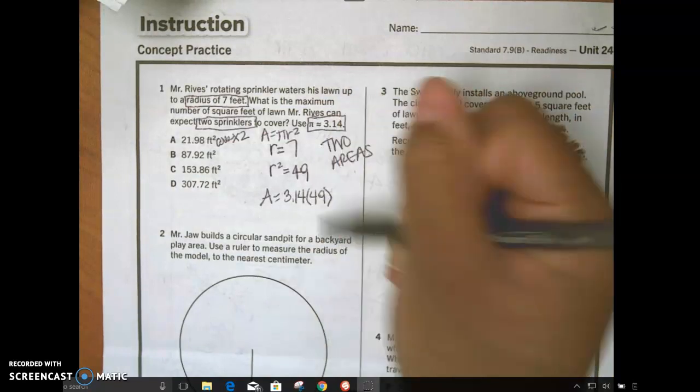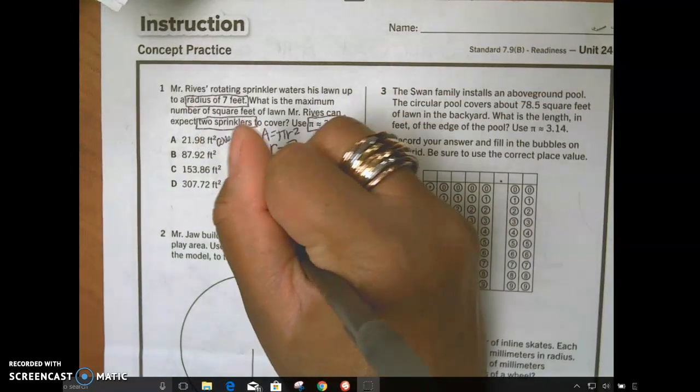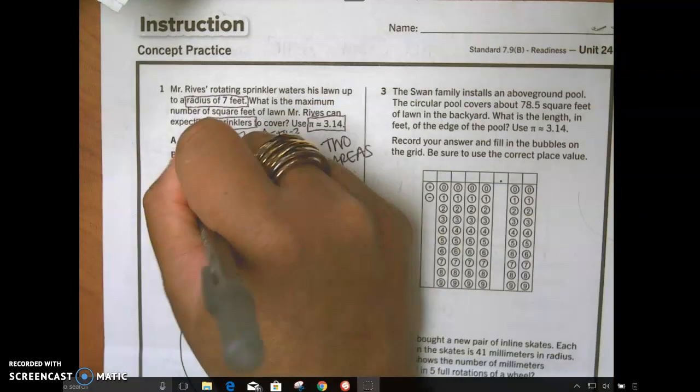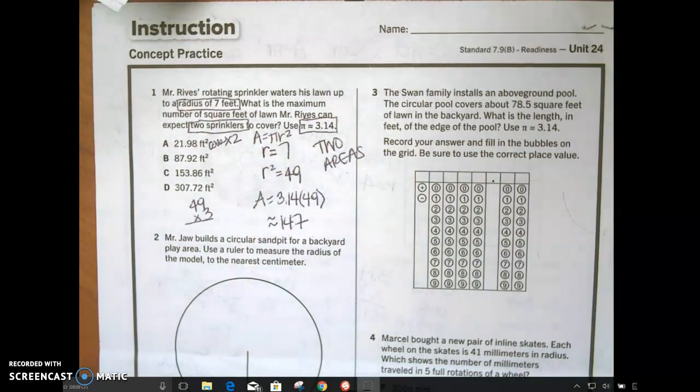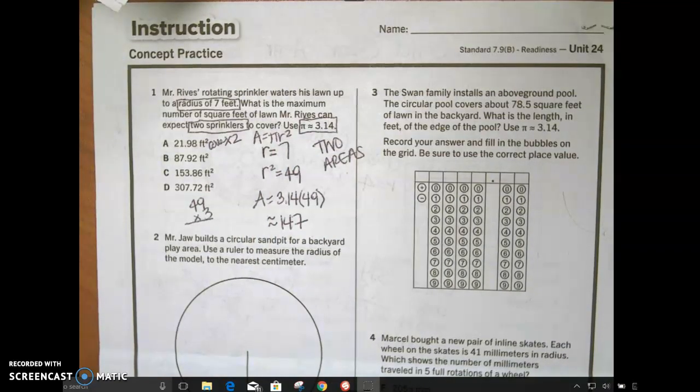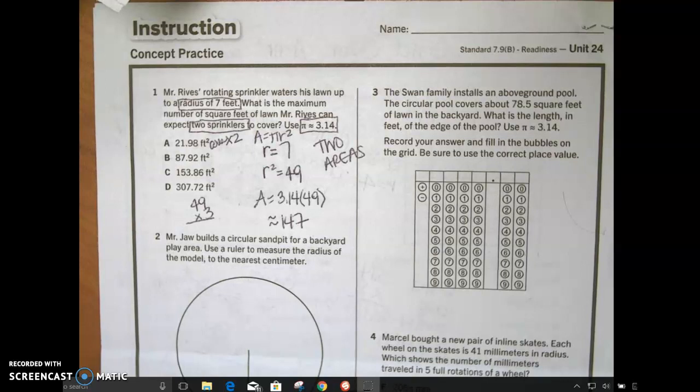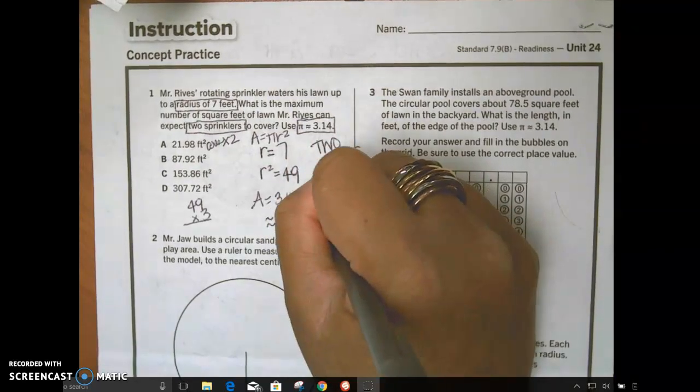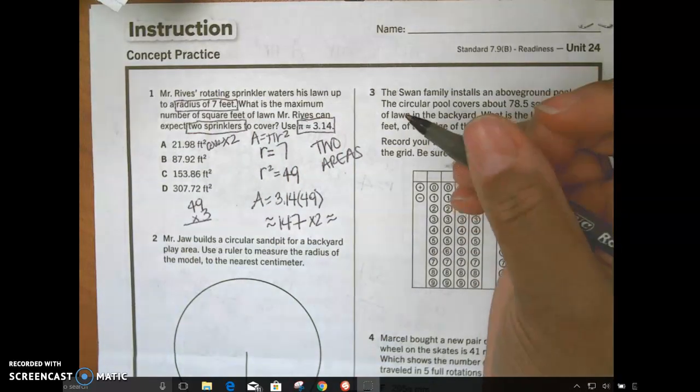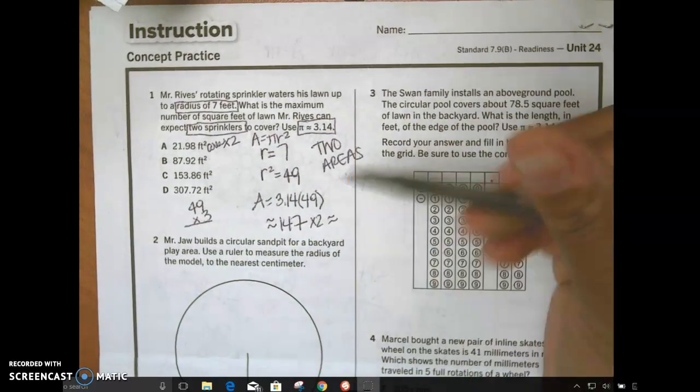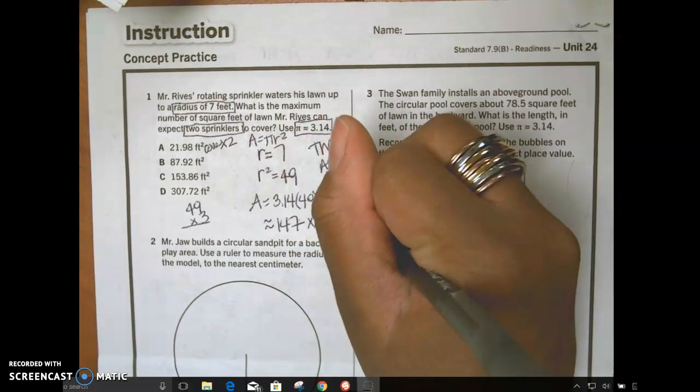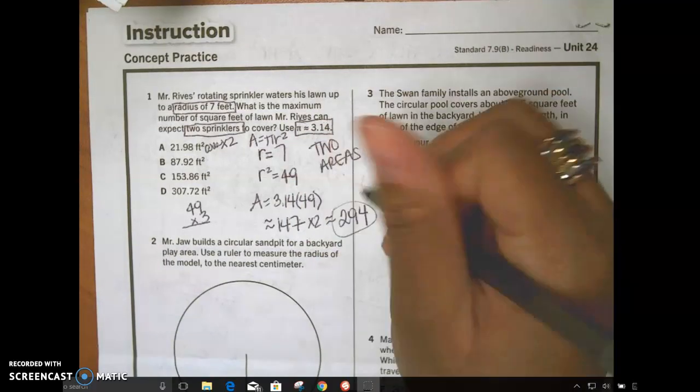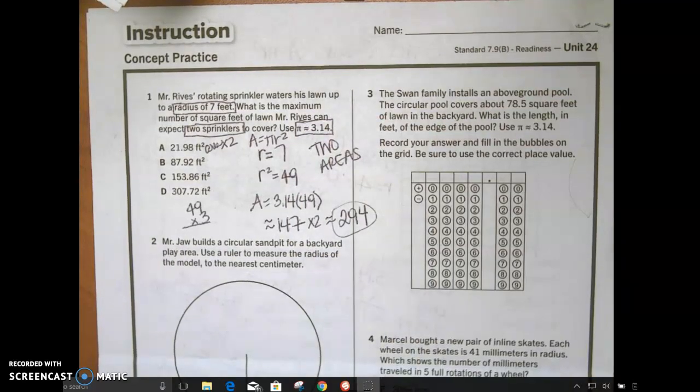What's 49 times about three? 49. Am I done? No. Why? I need two of them. So what do I need to do now? What's 147 times two? It's not going to end in an eight. It's not going to end in a four. Oh wait, yes it is. My bad. Now which answer is closest to 294 but it's got to be a little bit more? D, 307.